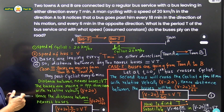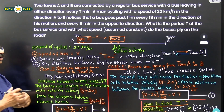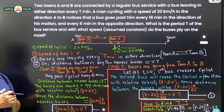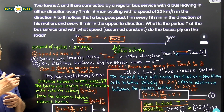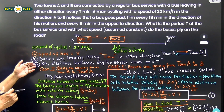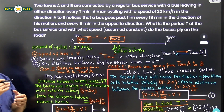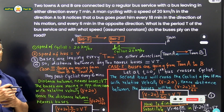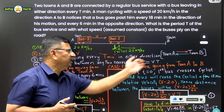Now let the speed of the cyclist be 20 km per hour and the speed of the bus be V. Every bus leaves town A after equal intervals of time, capital T. The buses are leaving every 10 minutes in either direction. So the distance between any two consecutive buses at any moment is V multiplied by T.